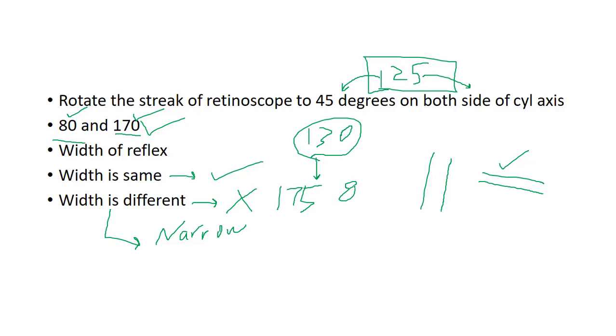And again, I will compare the thickness of the retinoscopic reflex at 85 and 175. If both the retinoscopic reflexes have the same width, it means that 130 is the correct axis. And if not, then I will again move towards the thinner reflex.